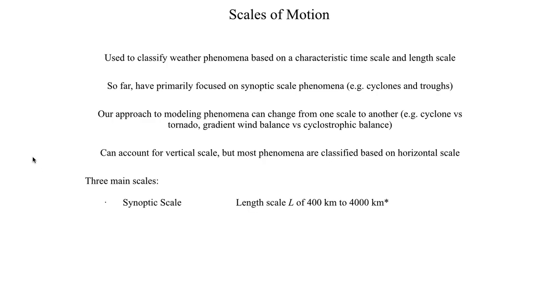Just to get an initial bearing, when we're thinking about synoptic scale phenomena, we think about a characteristic length of 400 kilometers or larger. A cyclone is usually more than 400 kilometers large, sometimes going up to 4,000 kilometers, which is sometimes referred to as planetary scale or global scale.